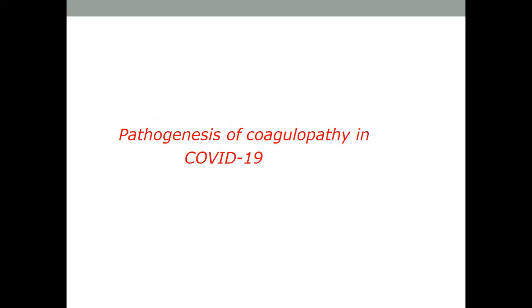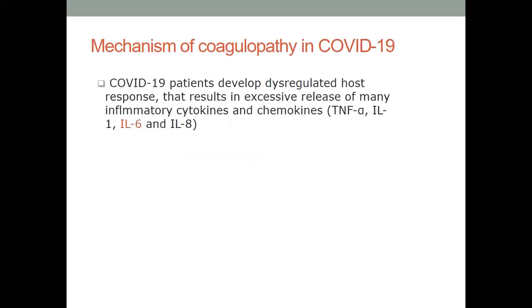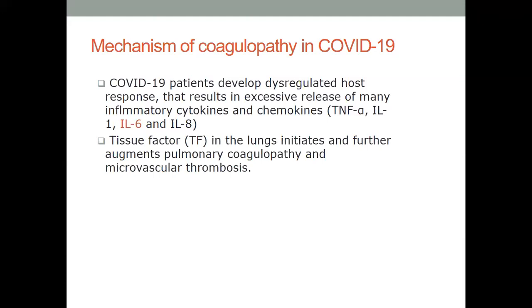Coming to the pathogenesis of coagulopathy in COVID-19: the mechanism is said to involve both the virus and the host factor, mainly the host response through a dysregulated cytokine response — some experts call it cytokine storm syndrome. These patients develop a dysregulated response resulting in excessive release of many inflammatory cytokines and chemokines including TNF-alpha, IL-1, IL-6, IL-8, and tissue factor, which triggers the coagulation cascade through the extrinsic pathway.